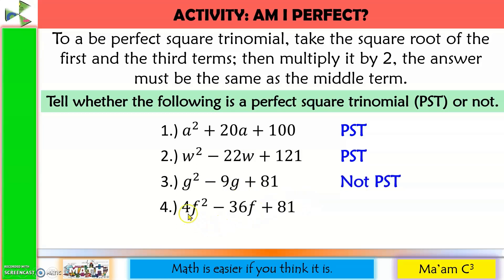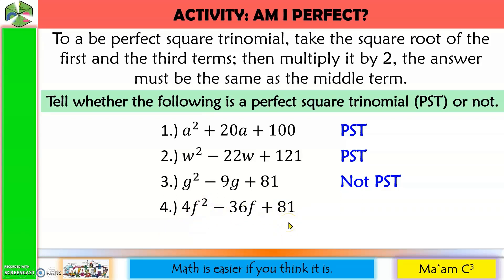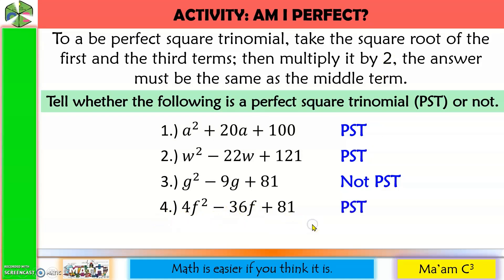Number 4: the square root of 4 is 2, the square root of f squared is f, so we have 2f. The square root of 81 is 9. 2f times 9 is 18f, times 2 is 36f — and that is the middle term. Therefore, this is a PST.